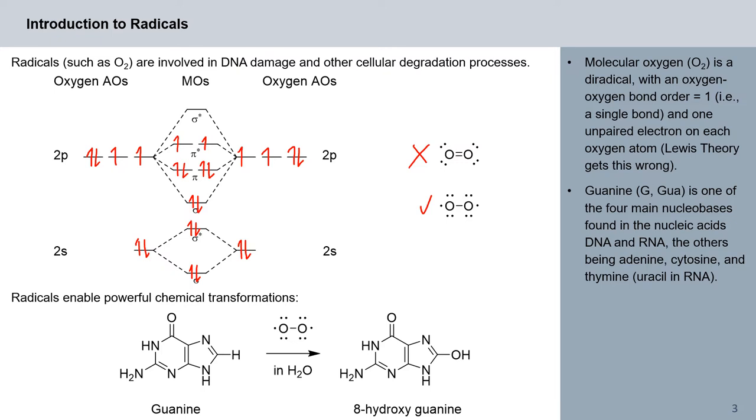Now such a diradical as oxygen is involved in DNA damage and other cellular degradation processes. However, it also enables powerful chemical transformations as we see here at the bottom. So here we see guanine, one of our four main nucleobases found in the nucleic acids of DNA and RNA.